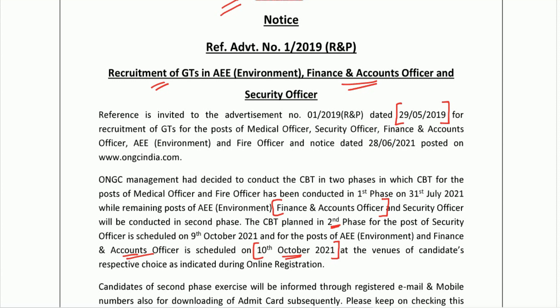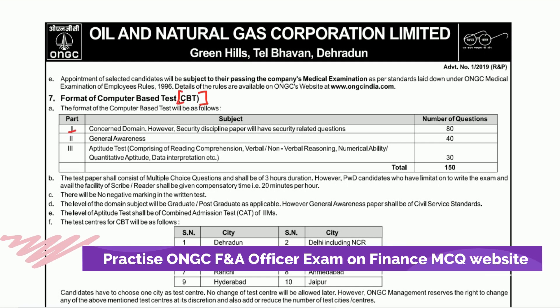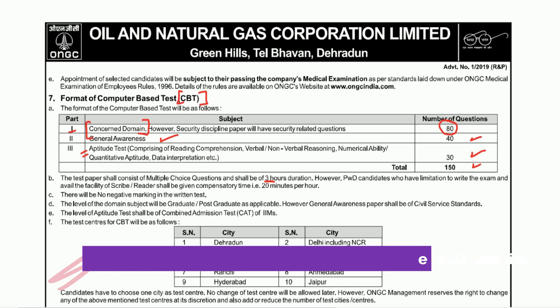Let's quickly look at the exam pattern. Your computer-based test will consist of three parts: Part 1 is related to your concerned domain or technical syllabus, consisting of 80 marks. Part 2 is General Awareness, which is 40 marks. Part 3 is the Aptitude Test, consisting of 30 questions. So in total, there will be 150 questions and the time allotted is three hours.